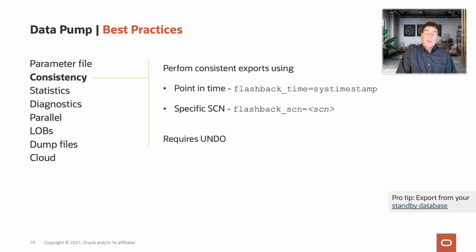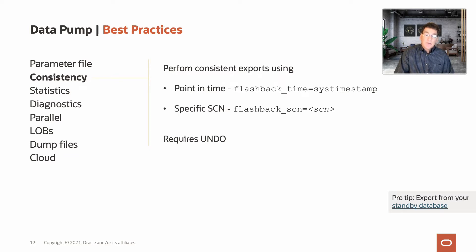By default, exports are only consistent on a per-table basis. If you want all tables in the export to be consistent to the same point in time, you need to use flashback_scn or flashback_time in the export command. SCN, or System Change Number, marks a consistent point in time in the database that export uses to enable the flashback query utility. The best practice is to use flashback_time — which uses the SCN nearest to sys timestamp — or a specific SCN, allowing all exported table data to be retrieved as of a particular SCN. This requires configuring automatic undo management.